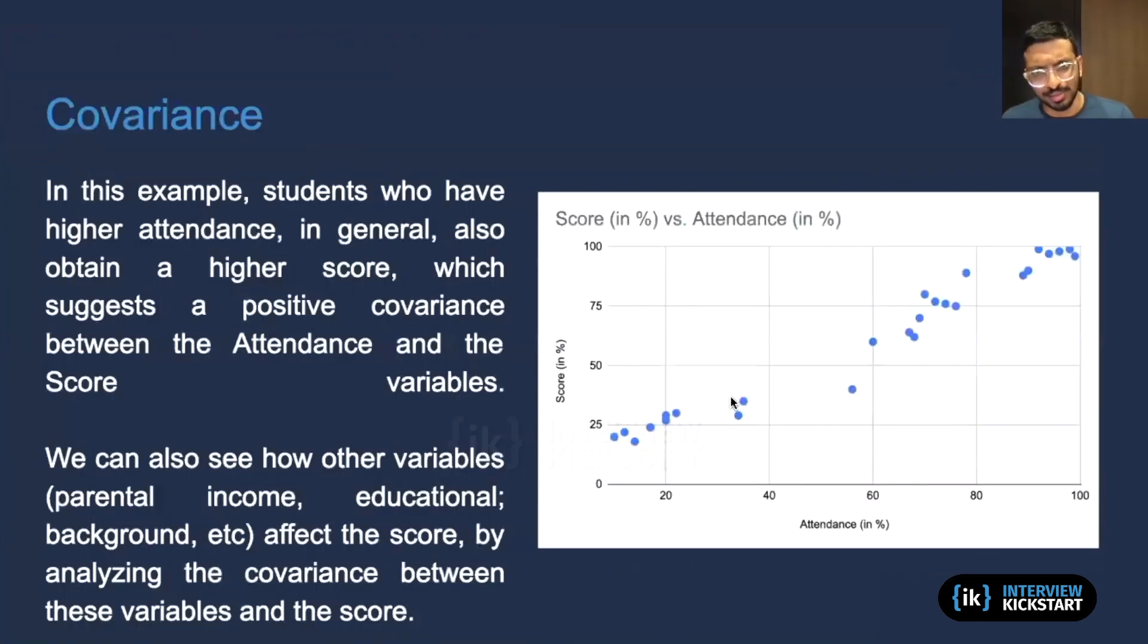This is an example of what covariance could look like. So we have over here on the x-axis, the attendance of students in a particular class. And on the y-axis, we have the score that they obtain in a particular examination. And in general, over here, we see that for low values of attendance, we see lower final scores. And for high values of attendance, we see higher final scores.